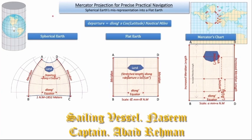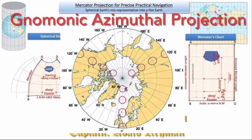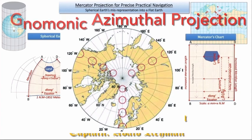Therefore, a Mercator chart cannot be drawn for 90 degrees or for the polar regions. For polar regions, gnomonic azimuthal projection is used, in which meridians radiate out from the center as the pole.